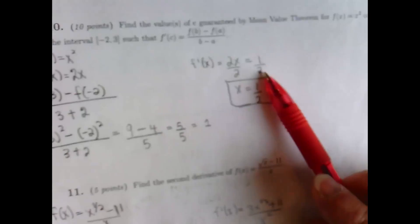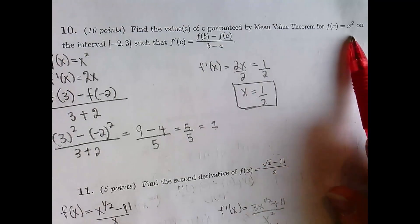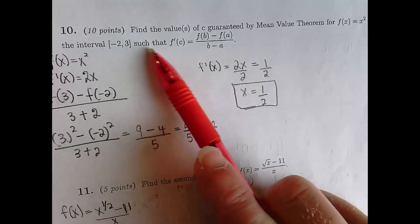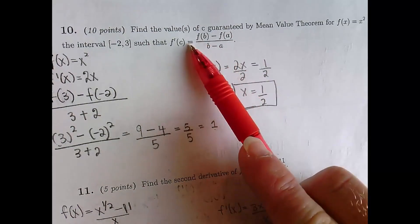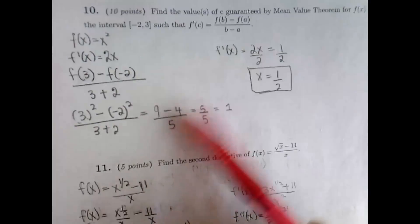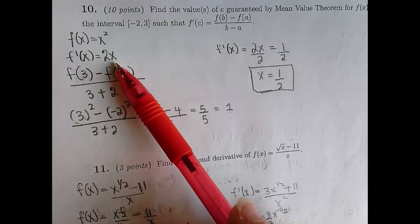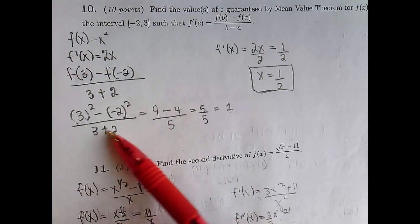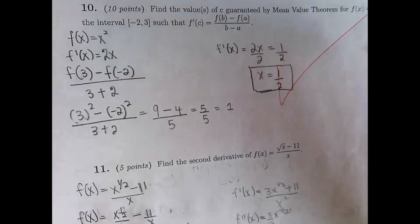This one requires using the mean value theorem for the function x squared on the given interval. They basically have to solve for c using the MVT equation. They took the derivative — correct, correct, correct, correct. Perfect. Good stuff.